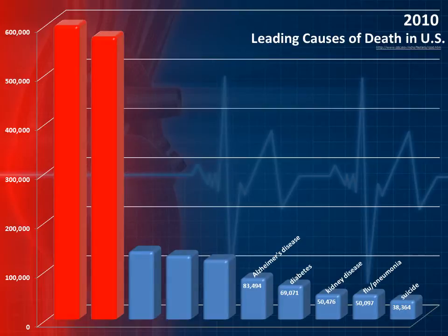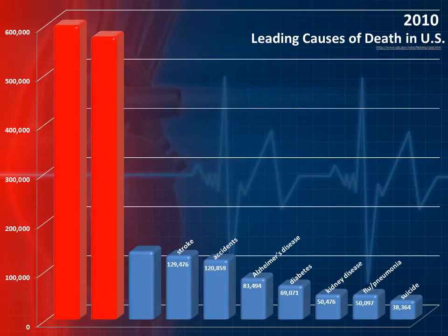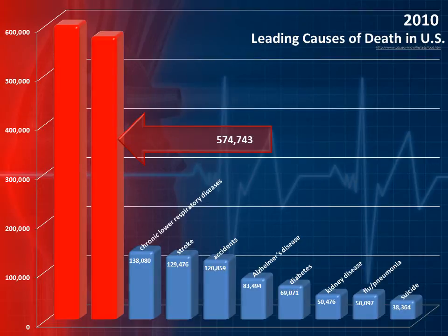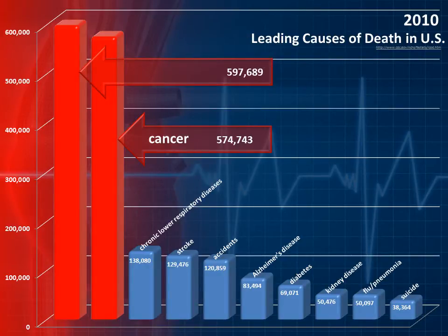83,494 deaths were from Alzheimer's disease. 120,859 from accidents. 120,476 from stroke. 138,080 from chronic lower respiratory diseases. 574,743 from cancer. And 597,689 from heart disease.